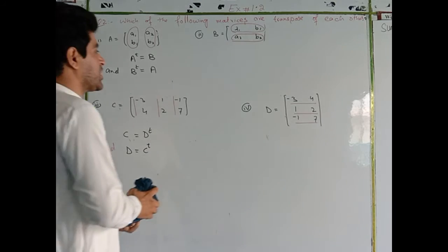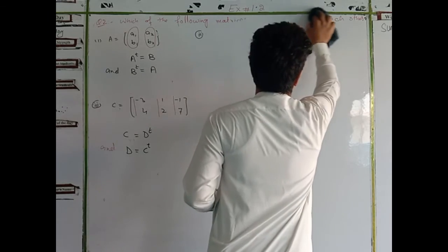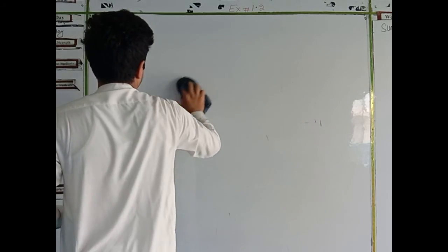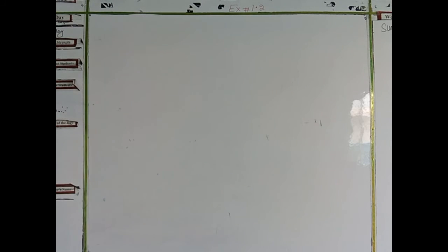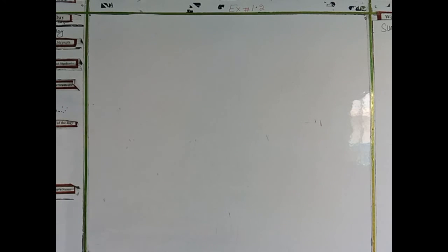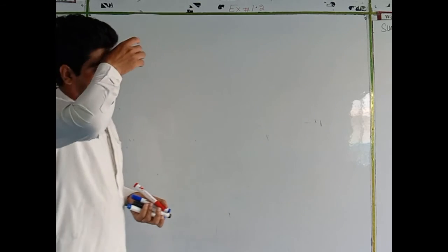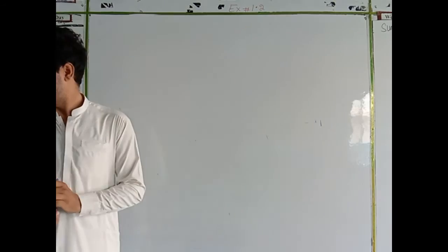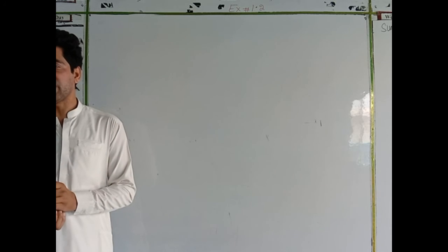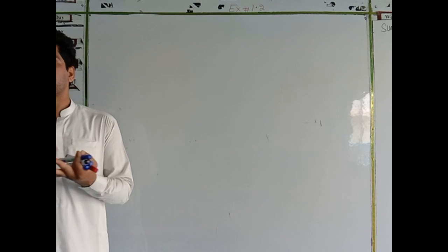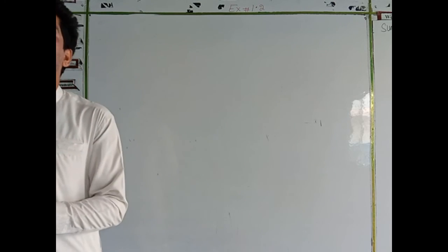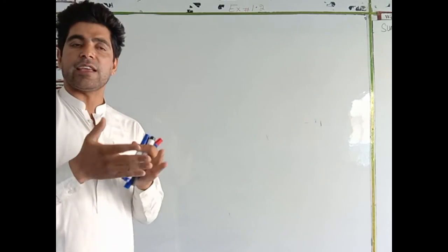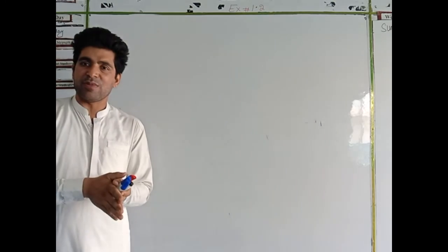We have three and four number questions remaining, but because the lecture is very long, we will do only one more question. The next topic is: which of the following matrices are symmetric and which are skew-symmetric? Symmetric means the transpose equals the matrix itself; skew-symmetric means the transpose equals minus the matrix.